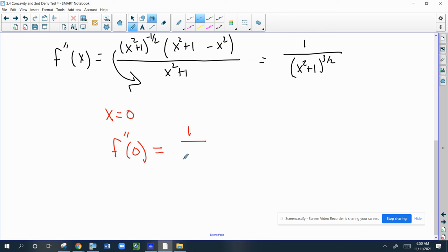So the second derivative at zero is one over, and you don't have to physically show this substitution because it's obvious that it's going to be positive. Which means it's concave up, which means we must have a minimum at X equals zero.